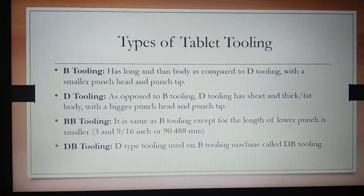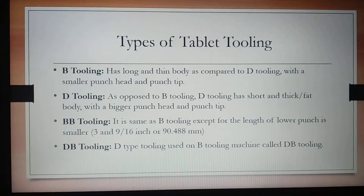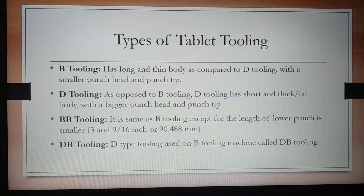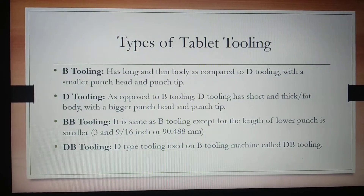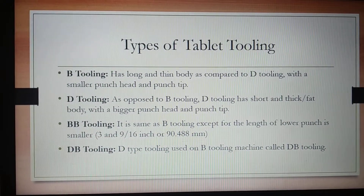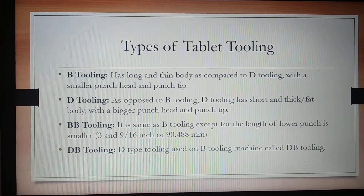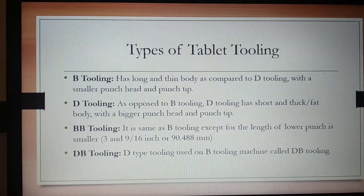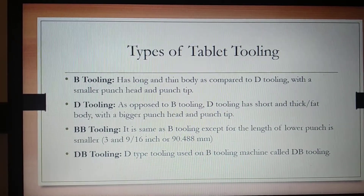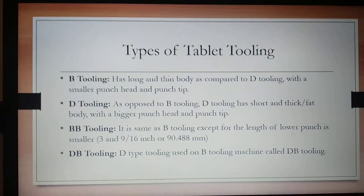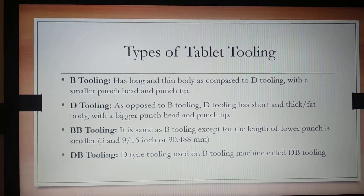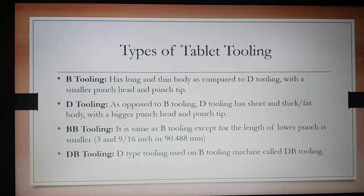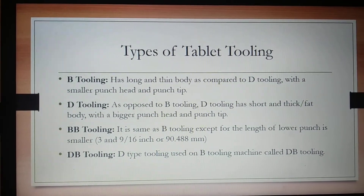D tooling has a bigger punch head and punch tip. BB tooling is the same as B tooling except the length of the lower punch is smaller, that is 3 and 9/16 inch or about 90.488 millimeters. DB tooling is the D type of tooling when used on a B tooling machine.